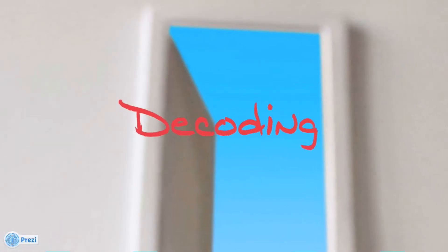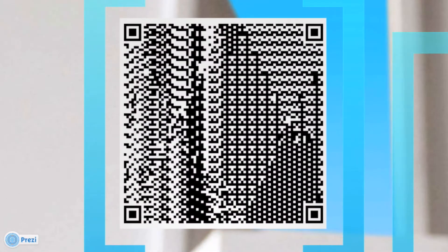The last step in the process is decoding. The bit matrix is decoded according to the QR version used — the square, the rectangular, or the colorful version — to get the image back.